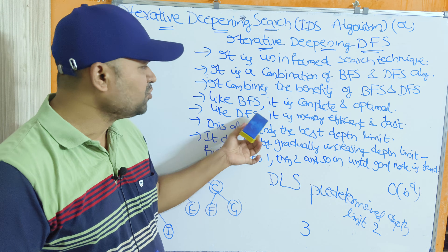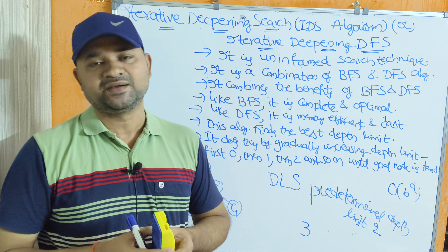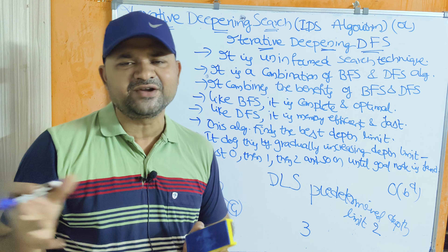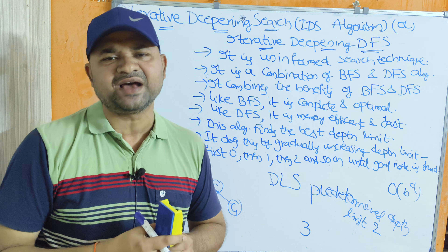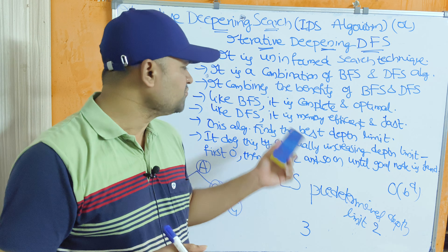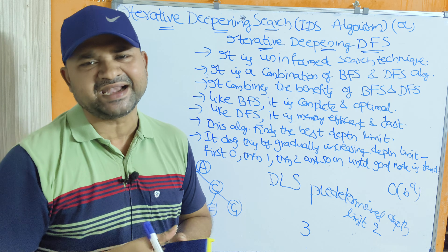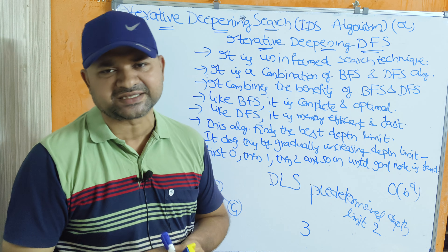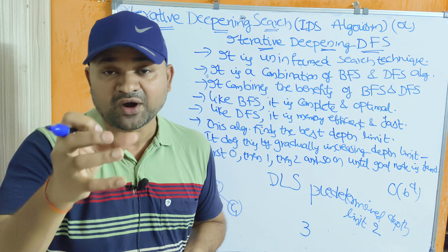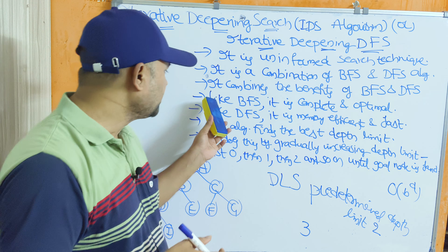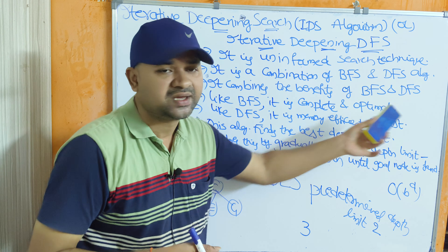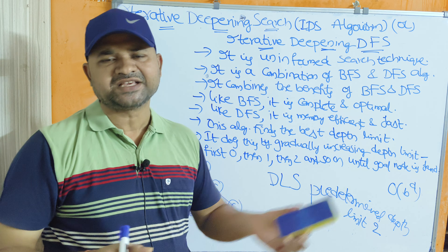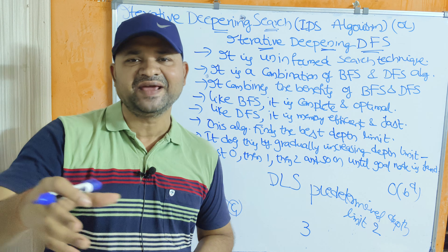The benefits of BFS are that it is complete and optimal. In BFS, we search all nodes at each level, so if a tree contains 100 nodes we traverse all 100 until the goal node is found — giving 100% guarantee. BFS is also optimal: when a solution exists in multiple paths, BFS always produces the shortest path. Similarly, IDS is also complete and optimal, searching all nodes and giving the best path.